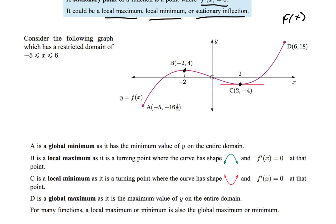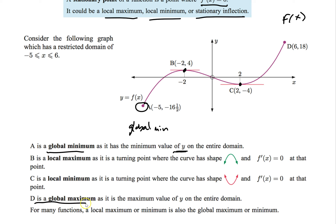Let's talk about this graph in general. A global minimum is the absolute lowest y value of the graph. A global max is the highest point on the graph. Not all graphs have a global max and min — some graphs go on forever, so they have no max or no min.